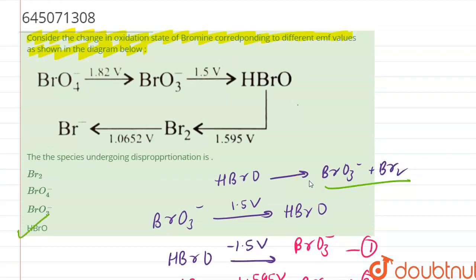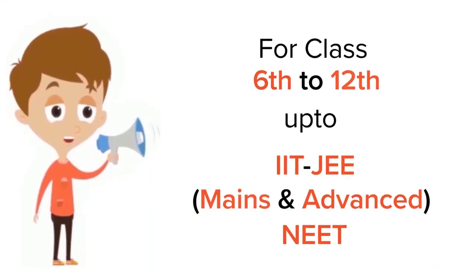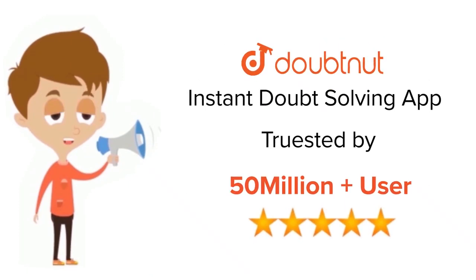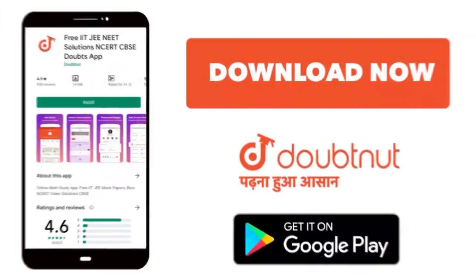So the answer of this question is HBrO, which is option number B. For class 6 to 12, IIT-JEE and NEET level, trusted by more than five crore students. Download Doubtnet app today.